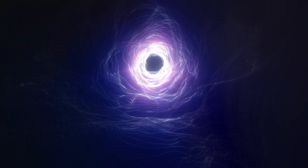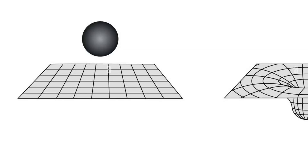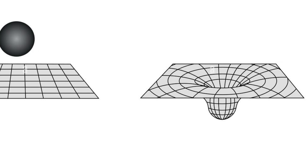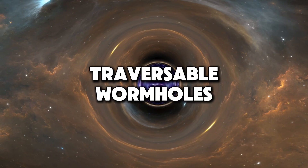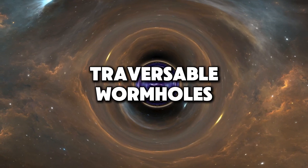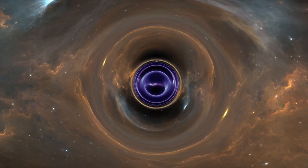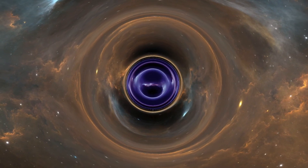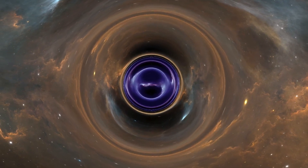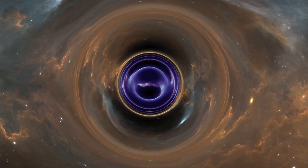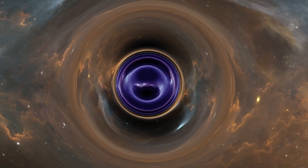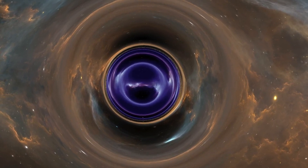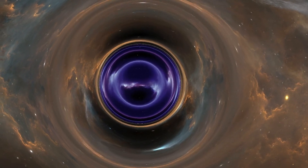Traversable wormholes are perhaps the most intriguing type from a practical standpoint, as they could theoretically allow for travel between two points in spacetime. To be traversable, a wormhole must have a stable throat that can remain open long enough for objects to pass through.